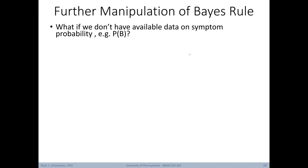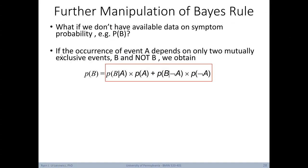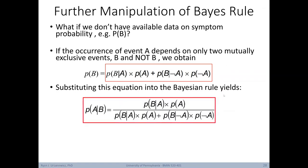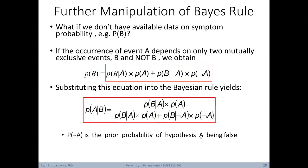What if we don't have available data on symptom probability — in other words, probability of B? If the occurrence of event A depends on only two mutually exclusive events B and not B, we can obtain an alternative way to calculate probability of B: the probability of B given A times the probability of A, plus the probability of B given not A times the probability of not A. We can substitute this into Bayes rule. The probability of not A is the prior probability of hypothesis A being false. This illustrates how when some probabilities aren't available, there are often alternative ways to calculate them based on available information.